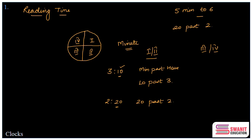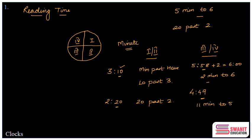Now let's talk about when the minute hand is in the third or fourth quadrant. For example, if the time is 5:58, the minute hand is in the fourth quadrant. So we say it is '2 minutes to 6' — the next hour — because after adding 2 minutes we get 6 o'clock. Let's take one more example: if it is 4:49, the minute hand is again in the fourth quadrant, so we say it is '11 minutes to 5.'